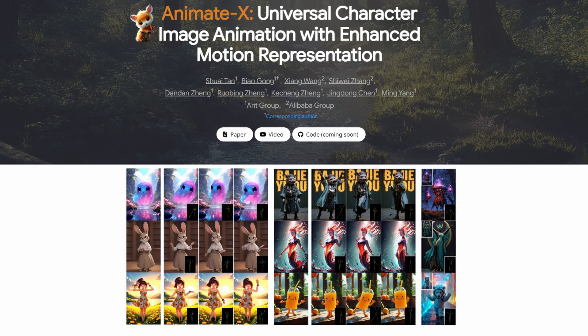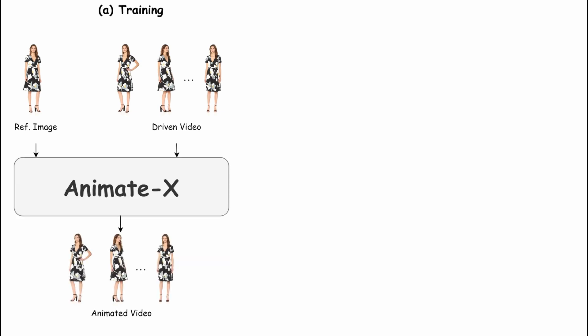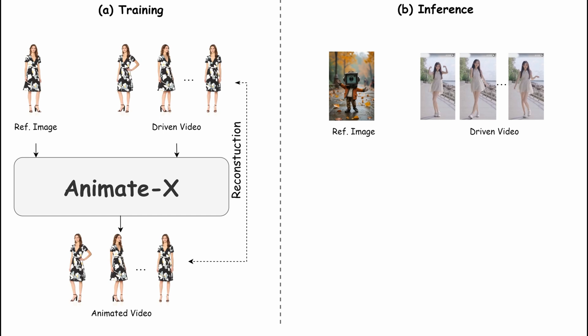So how does Animate X work? It's a simple but powerful process. First, you start with two inputs: a reference image and a reference video. The reference image is the character you want to animate and the reference video defines the movements you want to map onto that character.